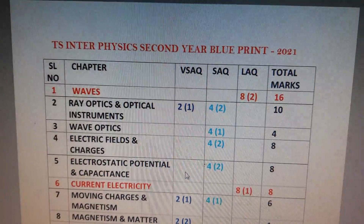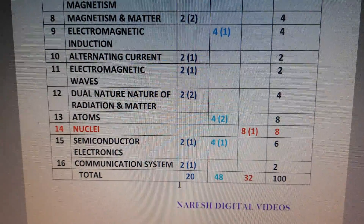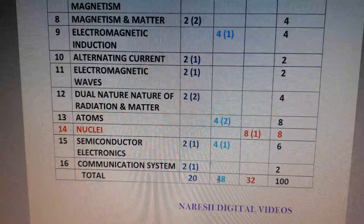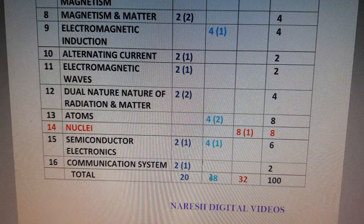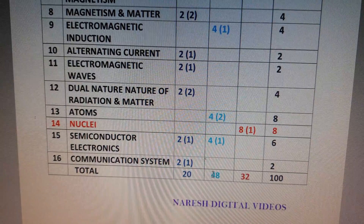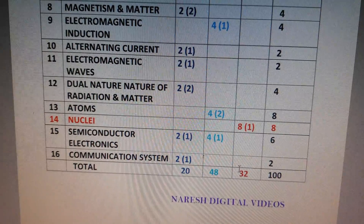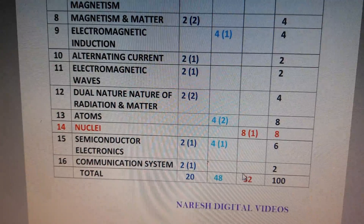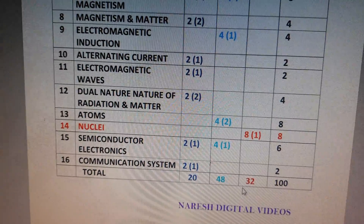For the total 2-mark questions in the 2020-21 academic year, 10 two-mark questions will be asked in the question paper, so 10 into 2 equals 20 marks. For 4-mark questions, 12 are asked but students can answer only 6, so 6 into 4 equals 24 marks. The total long answer questions asked is 4, but students write only 2, so 2 into 8 equals 16 marks.